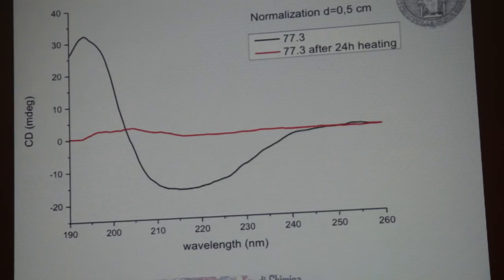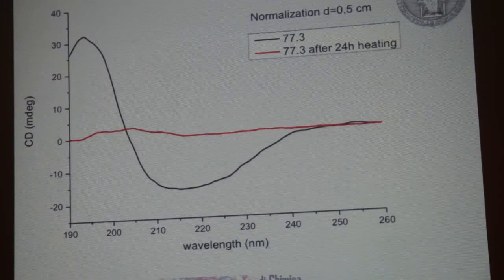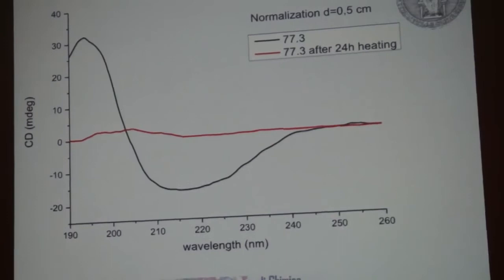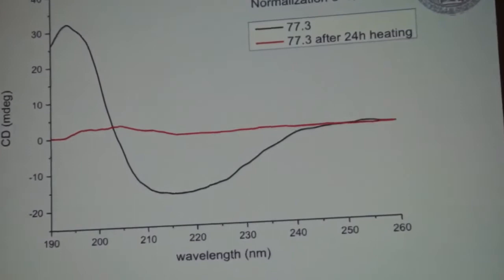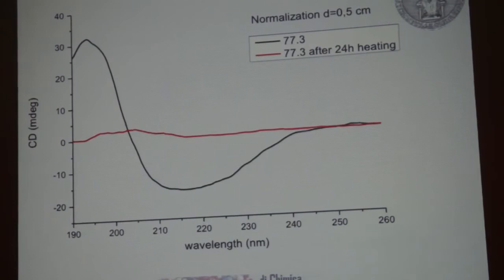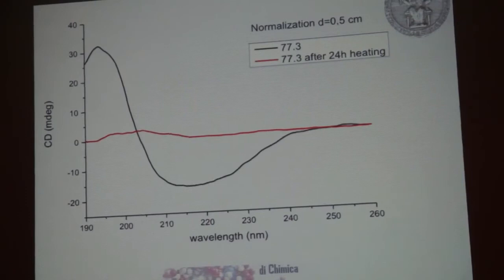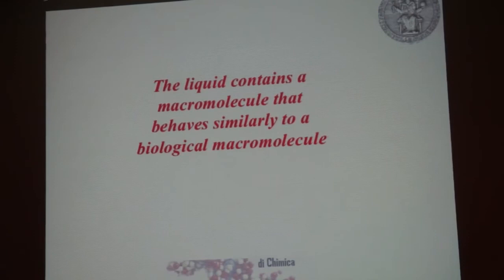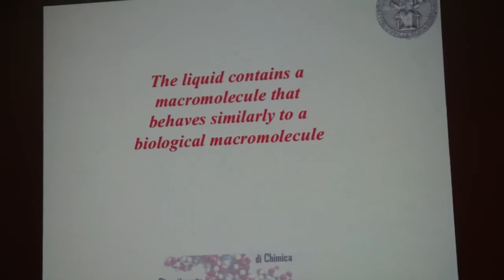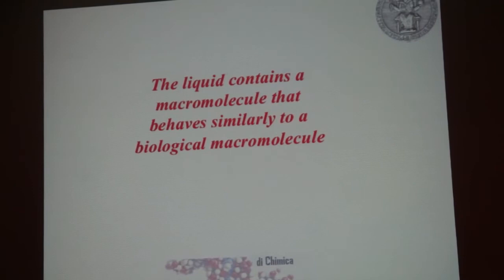One of the standard methods to denature a protein is an increase of temperature. Increasing temperature will also denature water — that is, produce the denatured state of water. It is not necessary to have a rupture of the symmetry of water, because the secondary structure of these water macromolecules can give circular dichroism. We conclude that the liquid contains a macromolecule with similarity to a biological macromolecule. These results are in the liquid state in solution.